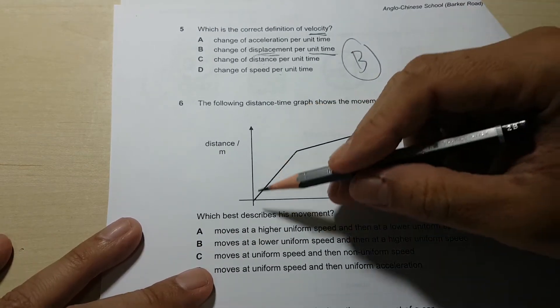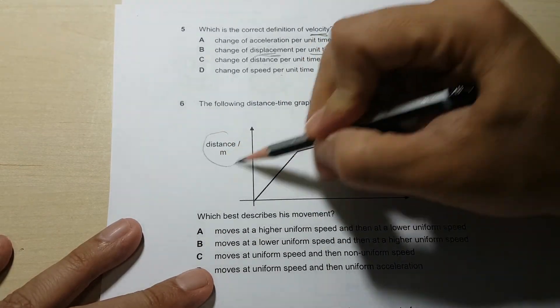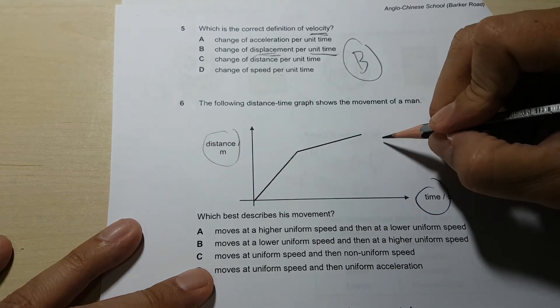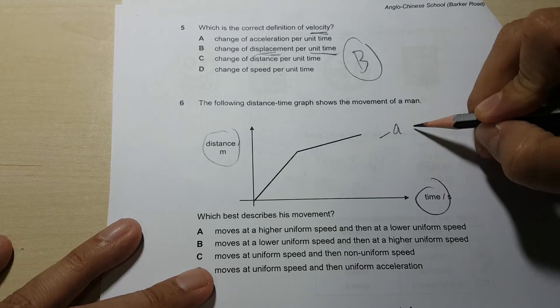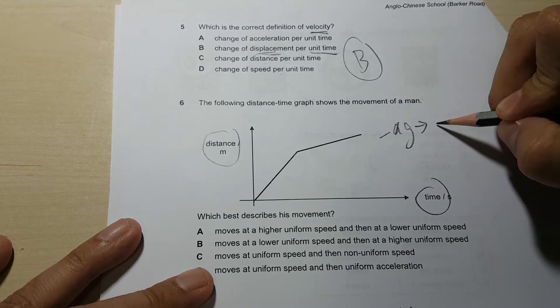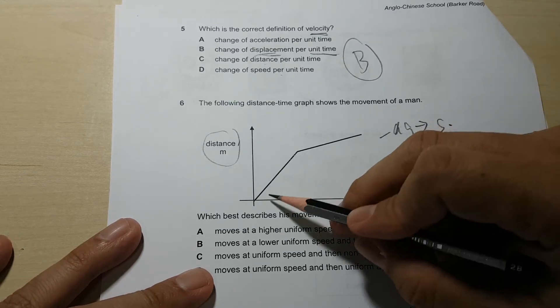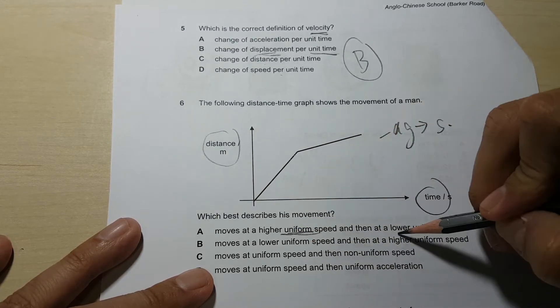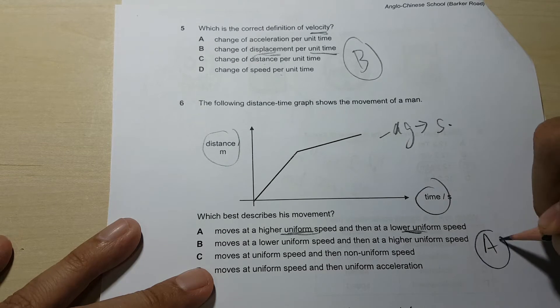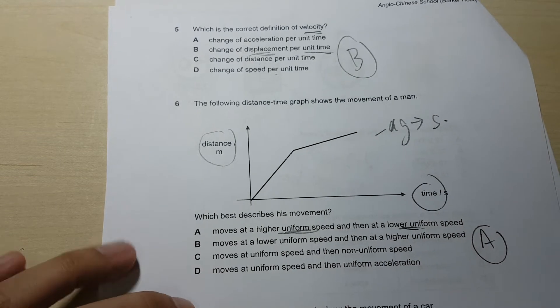Which best describes the movement? First thing you see in the graph, you got to see distance-time graph. So what do you tell in the distance-time graph? Two things. First thing, the gradient gives me the speed. So highest gradient, lower gradient. In other words, higher uniform speed to lower uniform speed.